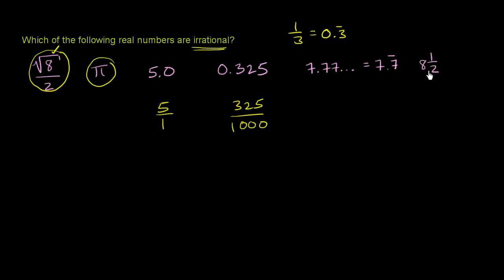8 and 1 half? Well, that's the same thing. 8 and 1 half is the same thing as 17 halves. So it's clearly rational. So the only two irrational numbers are the first two right over here.